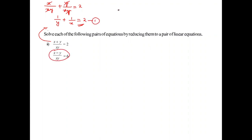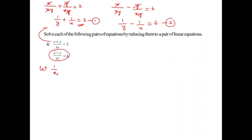Similarly, looking at the second equation, rewriting as x by xy minus y by xy equals 6, which simplifies to 1 by y minus 1 by x equals 6. Let this be equation number 2. Now I assume 1 by x equals A and 1 by y equals B. The first equation reduces to A plus B equals 2 (equation 3), and the second to minus A plus B equals 6 (equation 4).